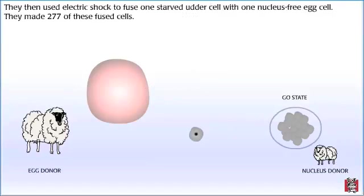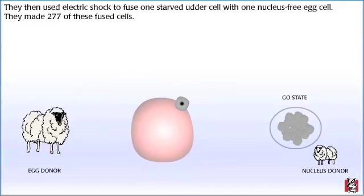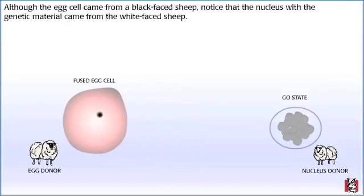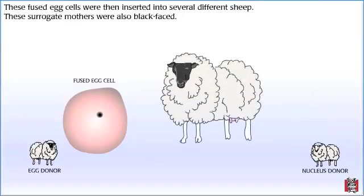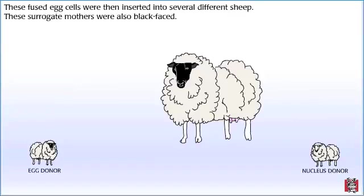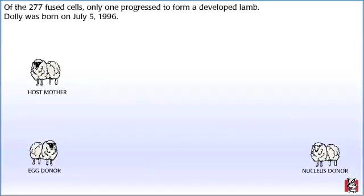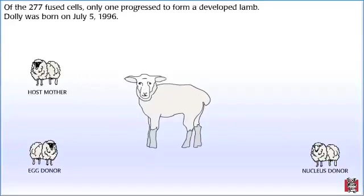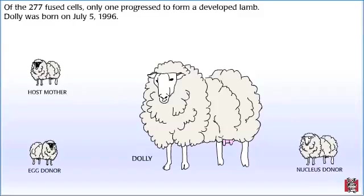They then used electric shock to fuse one starved udder cell with one nucleus-free egg cell. They made 277 of these fused cells. Although the egg cell came from a black-faced sheep, notice that the nucleus with the genetic material came from the white-faced sheep. These fused egg cells were then inserted into several different surrogate mothers, which were also black-faced. Of the 277 fused cells, only one progressed to form a developed lamb.